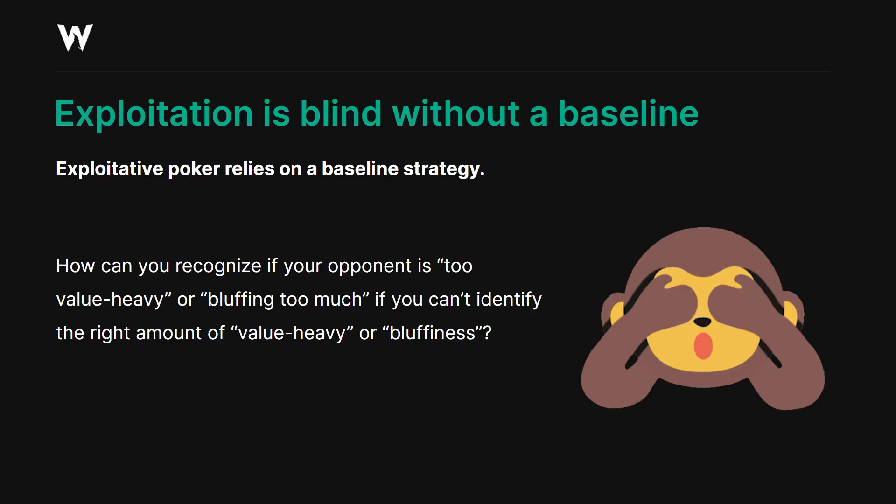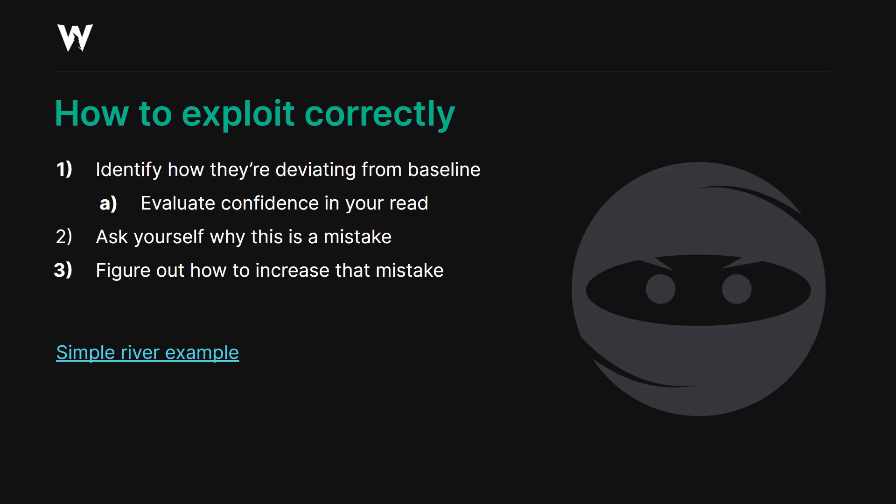So how do you exploit correctly? Firstly, you need a baseline — that is the GTO strategy. You need to identify how they're deviating from that baseline. As part of this step, you need to evaluate your confidence in your read. You can't just go gung-ho based on the very slightest intuition without taking on a huge amount of risk. So you do need to have some confidence in your read before you exploit correctly.